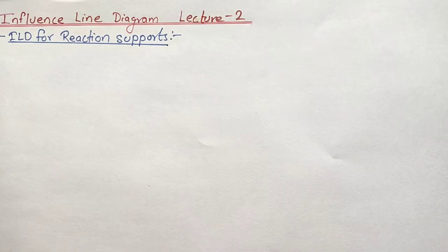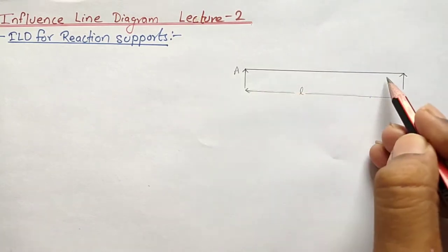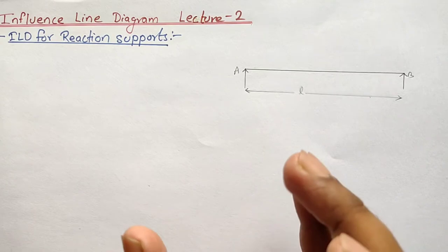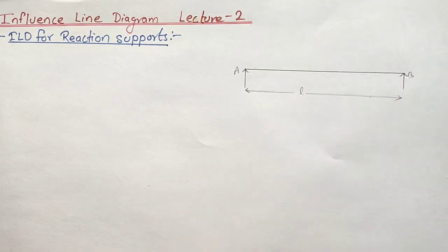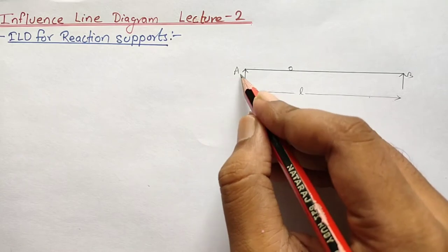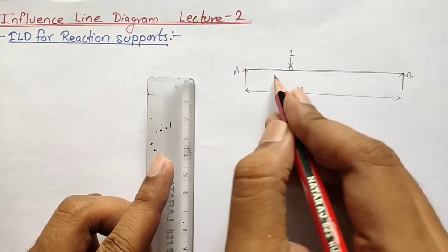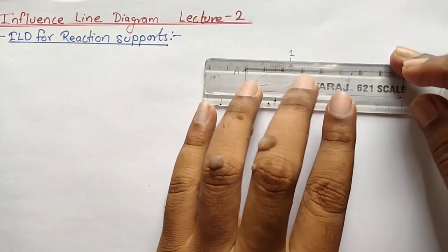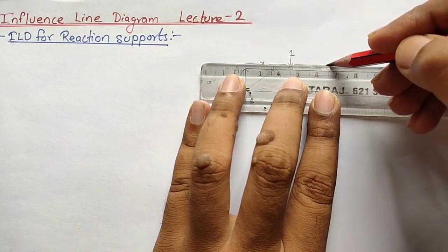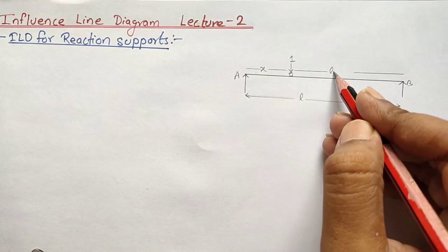Let us draw a simply supported beam AB of span L. Here is a simply supported beam AB of span L. Let us consider a unit load — as mentioned in the previous lecture, the influence line diagram is based upon the unit load — at distance x from support A. The remaining portion will be L minus x.